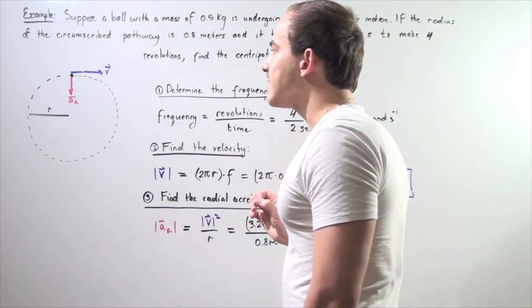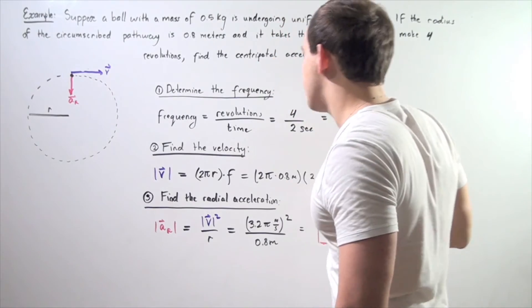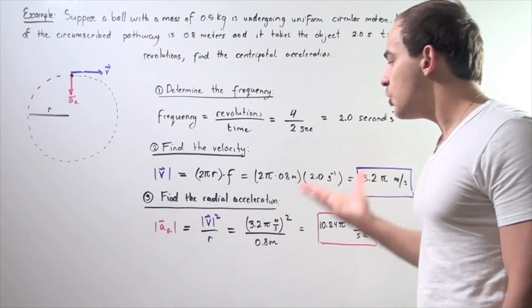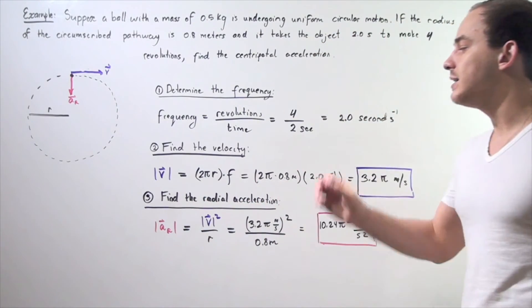Recall that the direction of velocity is always tangent to the pathway of the circle. Finally, in step three, we use our formula for radial acceleration to find